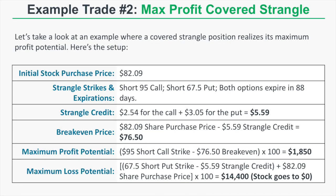In the second example, a trader realizes maximum profit on a covered strangle. The initial stock purchase price is $82.09. We sell the 95 call and the 67.50 put expiring in 88 days, collecting $2.54 for the call and $3.05 for the put, for a total strangle credit of $5.59.